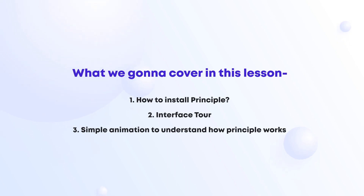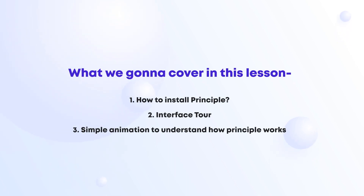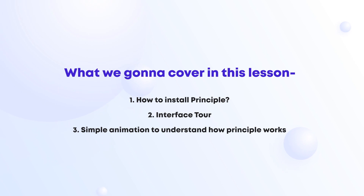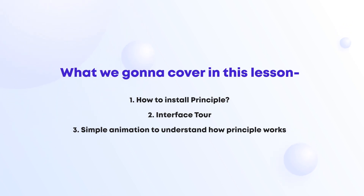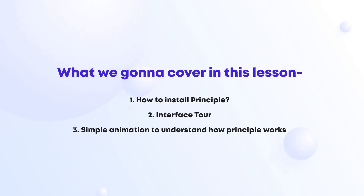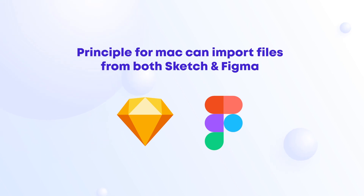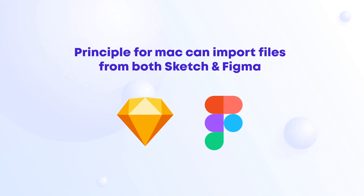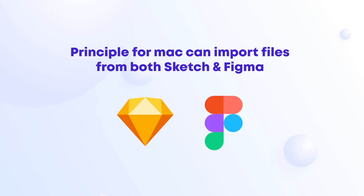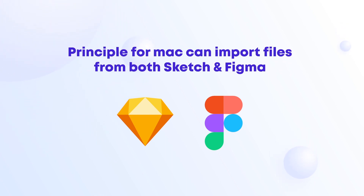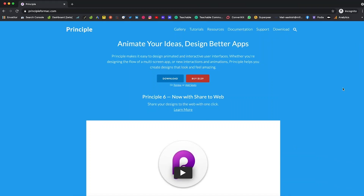In this video we're going to focus on three parts. First, how to install Principle. Second, we're going to see the interface of Principle. And third, we're going to connect two screens together and create a basic animation — a basic interaction just to see how Principle works. Also very importantly, Principle works with both Sketch and Figma, meaning you can easily import your UI designs from either. In this entire Principle module, we're going to focus on the Figma-Principle workflow.